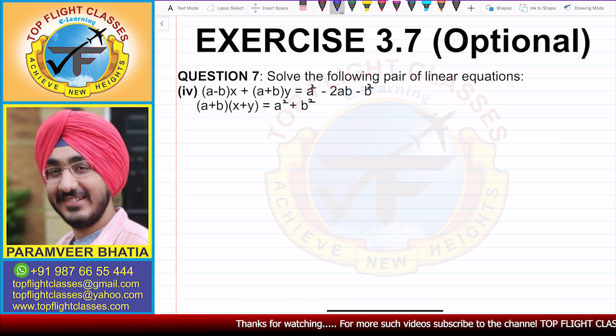The question says solve the following pair of linear equations. The fourth part is (a-b)x + (a+b)y = a² - 2ab - b², and the second equation is (a+b)(x+y) = a² + b².